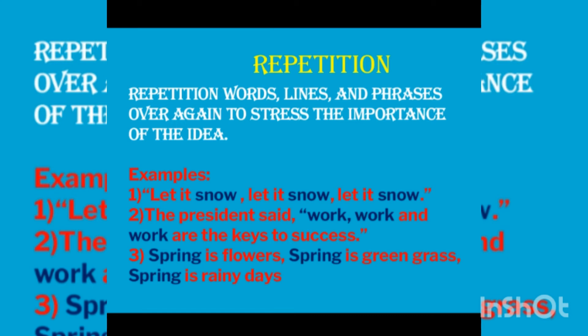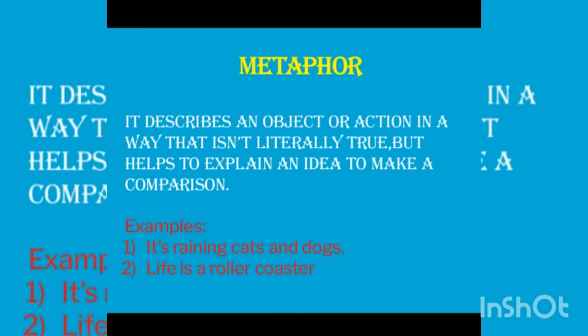Third example: 'Spring is flowers, spring is green grass, spring is rainy days' — the word 'spring' is repeated three times. So the difference is clear: alliteration repeats the beginning letters of words in a sentence, while repetition repeats words again and again. The difference is between a letter and a word.